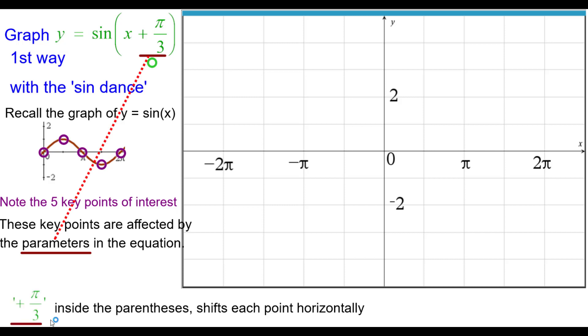The plus pi over 3 inside the parentheses shifts each point horizontally to the left pi over 3 units. That's the only parameter so the y coordinates are not affected, just the x coordinates.